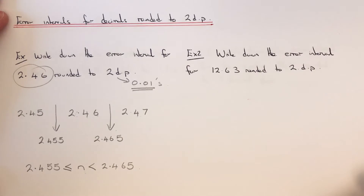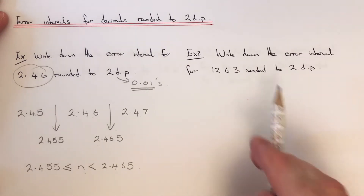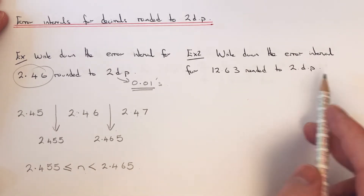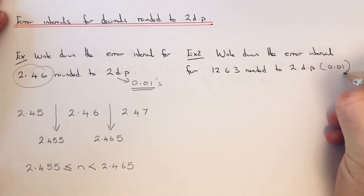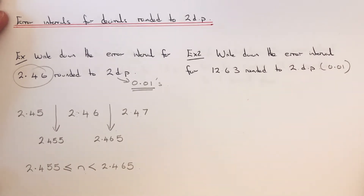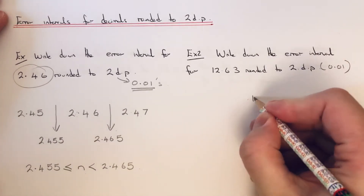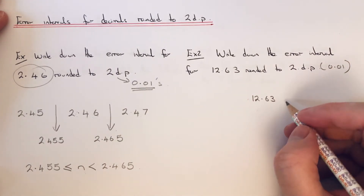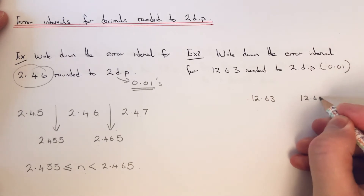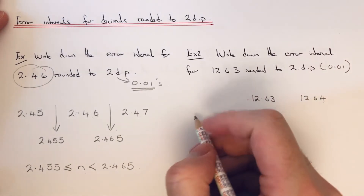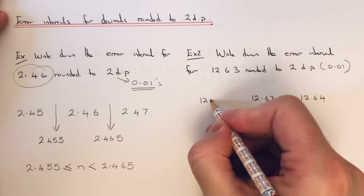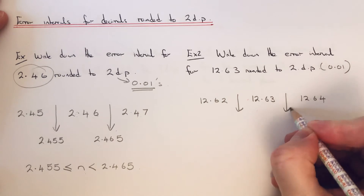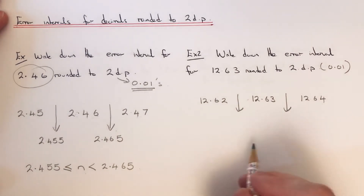Let's look at one more example: write down the error interval for 12.63 rounded to two decimal places. Again, this means our scale is increasing by 0.01 each time. Write 12.63 down — add 0.01 and we get 12.64; take 0.01 off and we get 12.62. We just need to find our halfway numbers to give our lower bound and upper bound.